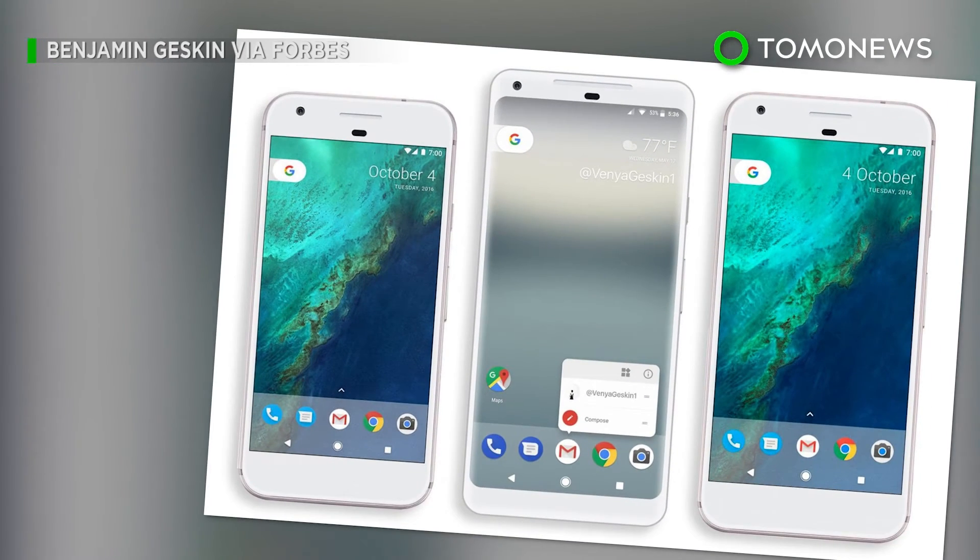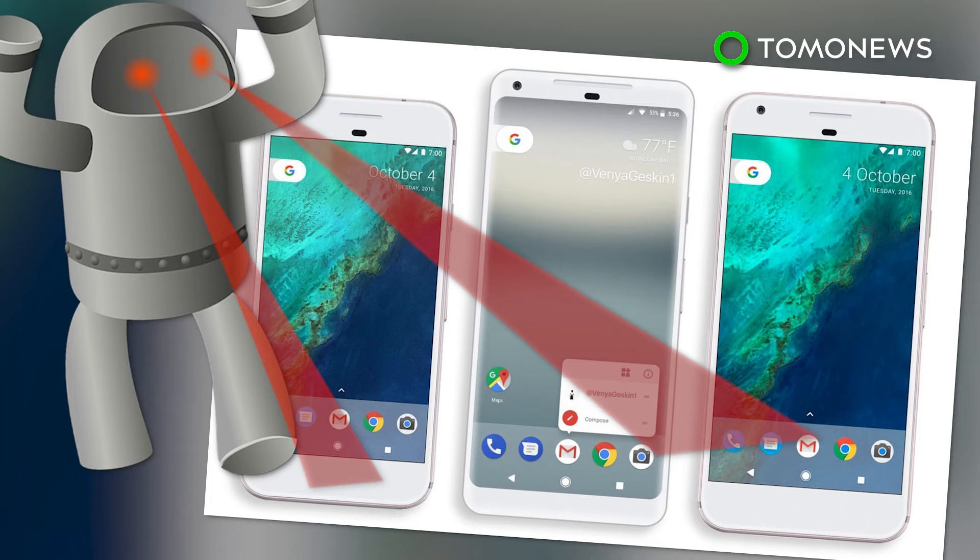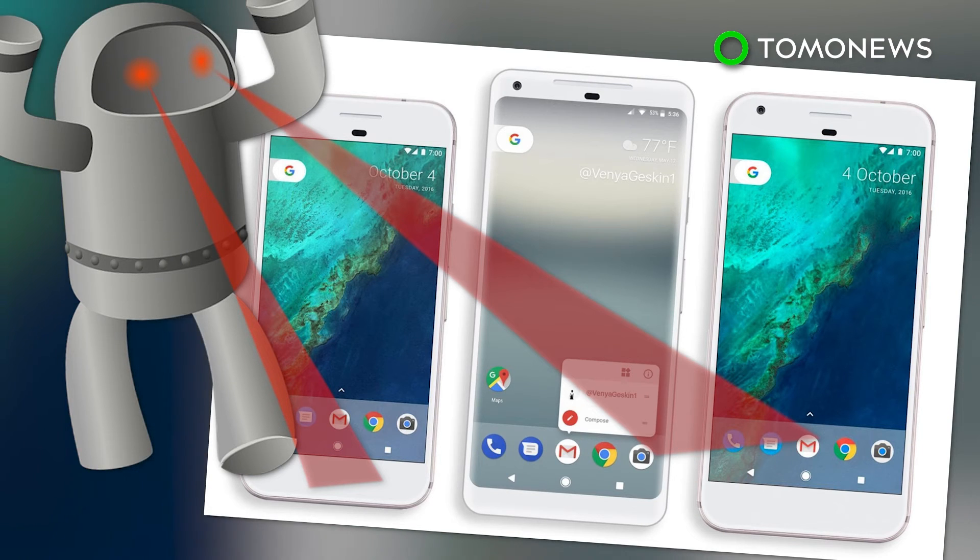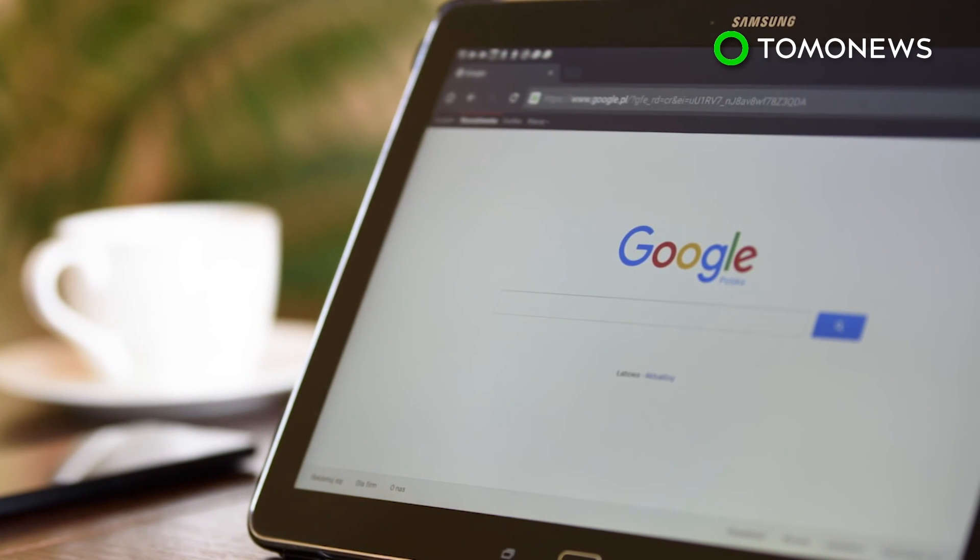But hey, maybe it's not the phone, maybe it's the YouTube algorithm gone rogue and instead of demonetizing creators, it's demonetizing Google, one $800 phone at a time. Probably not, but their share price did drop by 1.9% on Monday.